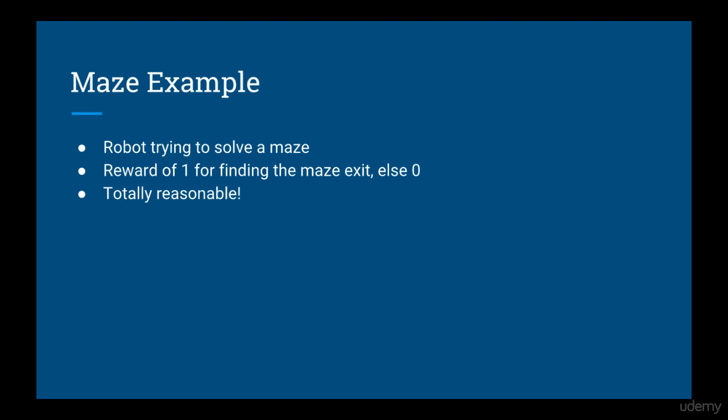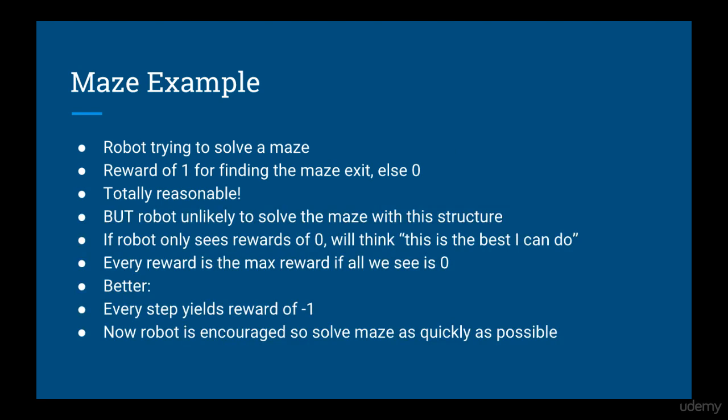Now to most people that seems reasonable, and it is reasonable. However, with this reward structure, the robot may never actually solve the maze. Remember that the robot only knows about what it's experienced, so if it's only ever seen a reward of 0, then it will think that's the best it can do. A better solution would be to give the robot a reward of minus 1 for every step it takes, and in that way it will be encouraged to solve the maze as quickly as possible.